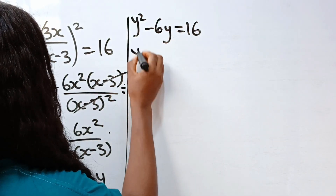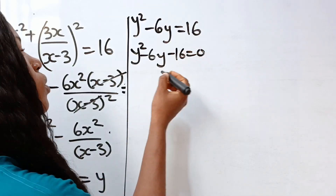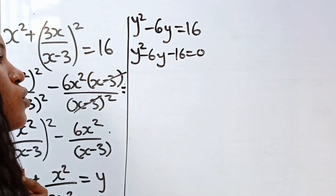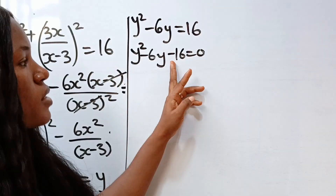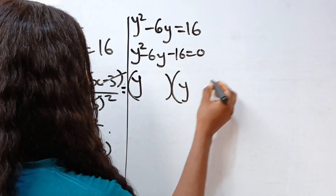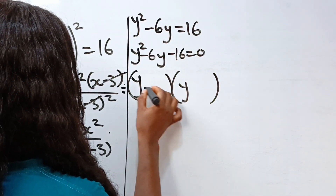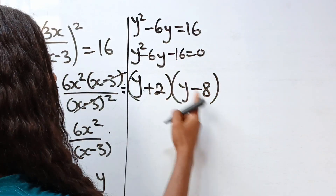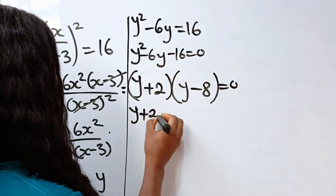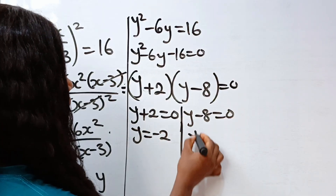Now let's bring this to this side of the equation. We have y squared minus 6y, and 16 crosses to become minus 16, is equal to 0. We need two factors of minus 16 that add to give minus 6. Those two factors are 2 and minus 8, because 2 times minus 8 is minus 16, and 2 minus 8 is minus 6. So we have y plus 2 and y minus 8, and this is equal to 0. That means y plus 2 equals 0 and y minus 8 equals 0, so y is minus 2 and y is 8.